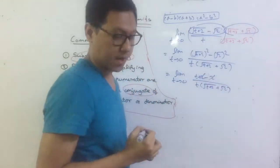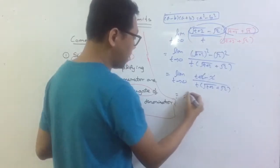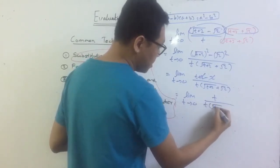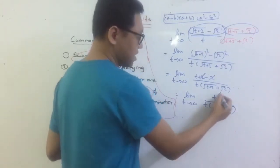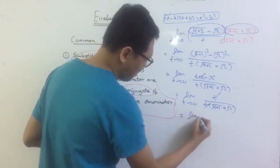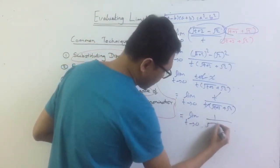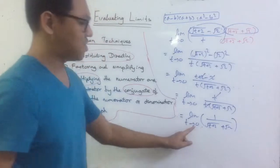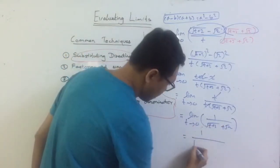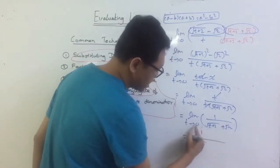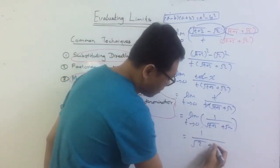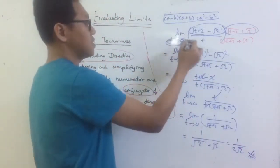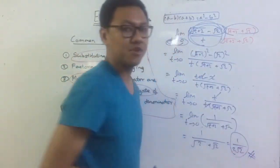Now you can substitute 0: 1 over (square root of 0 plus 2 plus square root of 2), which gives 1 over (square root of 2 plus square root of 2), equal to 1 over 2 root 2. So when t approaches 0, this whole expression equals 1 over 2 root 2. That's how you use the conjugate multiplication method.